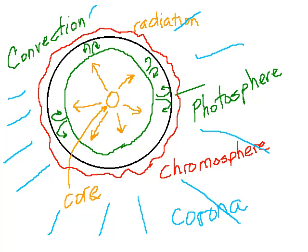Starting back at the center is the core — energy is produced there, radiated from that point, but it takes a long time to get through the core and out through the radiation zone. It then begins to make the gases bubble up in the process of convection, and we reach the region where we see the photosphere, the very bright glare of the Sun. Above that is the chromosphere and then the corona that extends way out into the solar system. The photosphere, by Wien's law, indicates it's in the 6,000 degrees Celsius range — about 10,000 degrees Fahrenheit. Then the temperature suddenly goes way up as we go out into the corona, where it can be a million degrees.